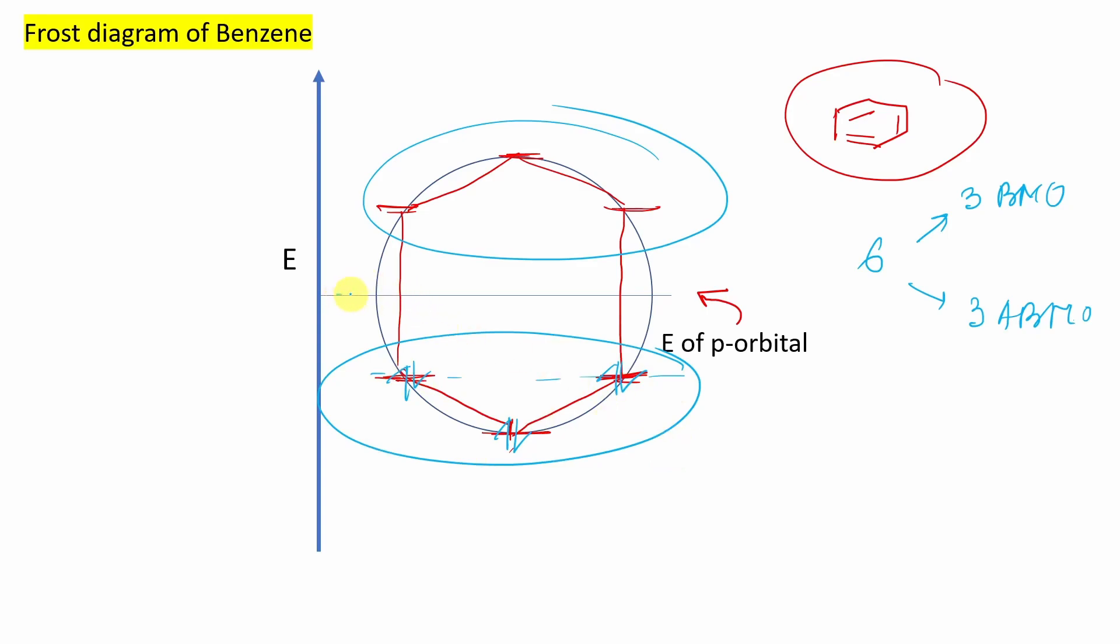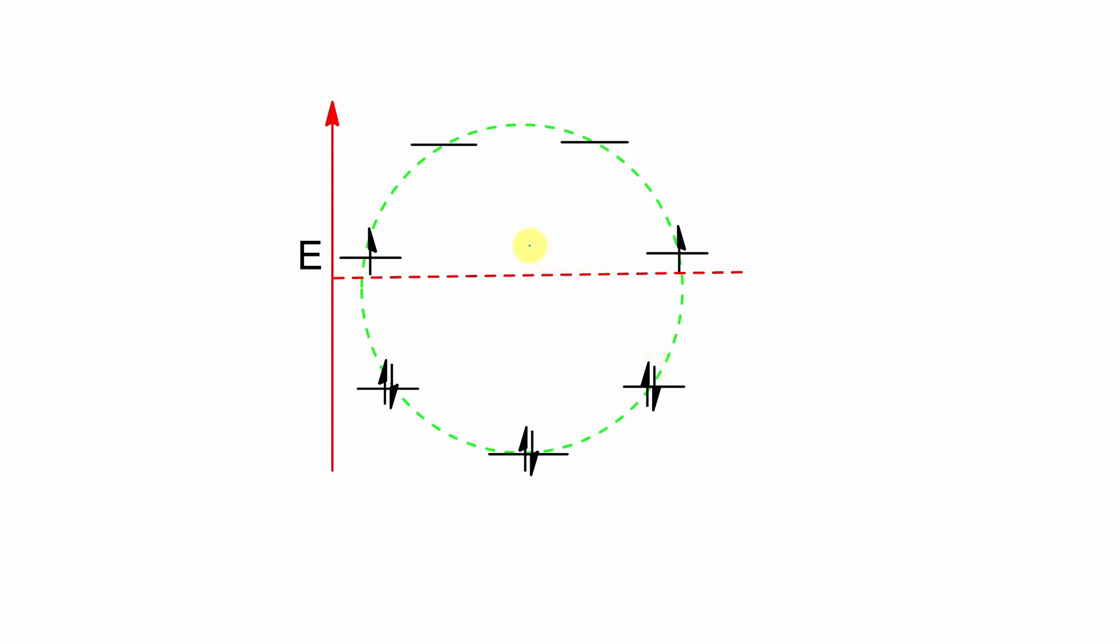Compared to their parent p orbital energy, their energy is low. Consequently, you can say they are stabilized. In this way, you can explain the huge stabilization energy of benzene by this Frost diagram. I guess you have understood. Let's go to our today's topic of discussion, this one. By the way, same logic.